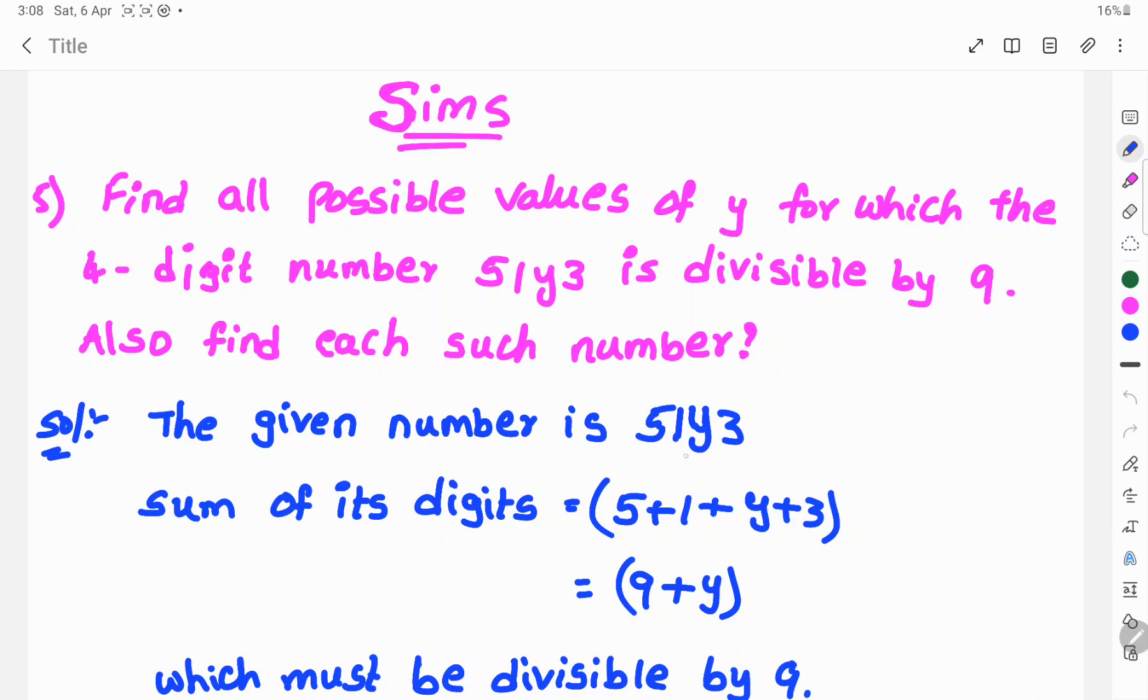The given number is 51y3. Sum of its digits is 5 plus 1 plus y plus 3.